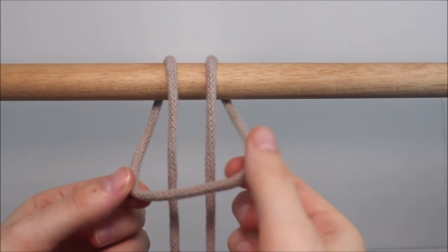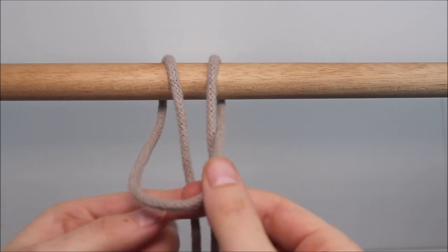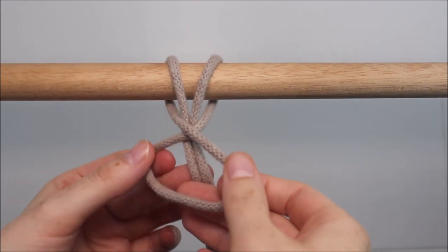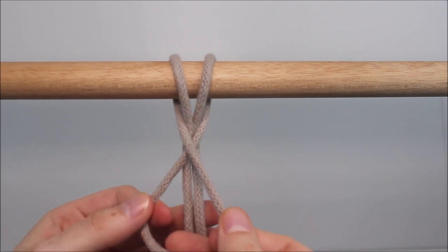Now, before we tighten this, we're going to take that loop and we're going to twist it so that you form an X shape.